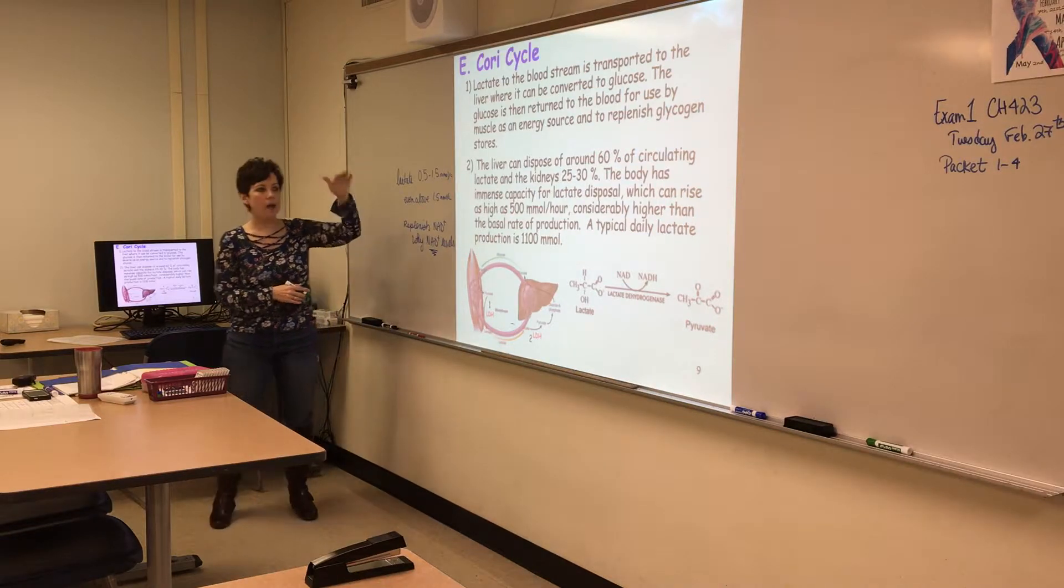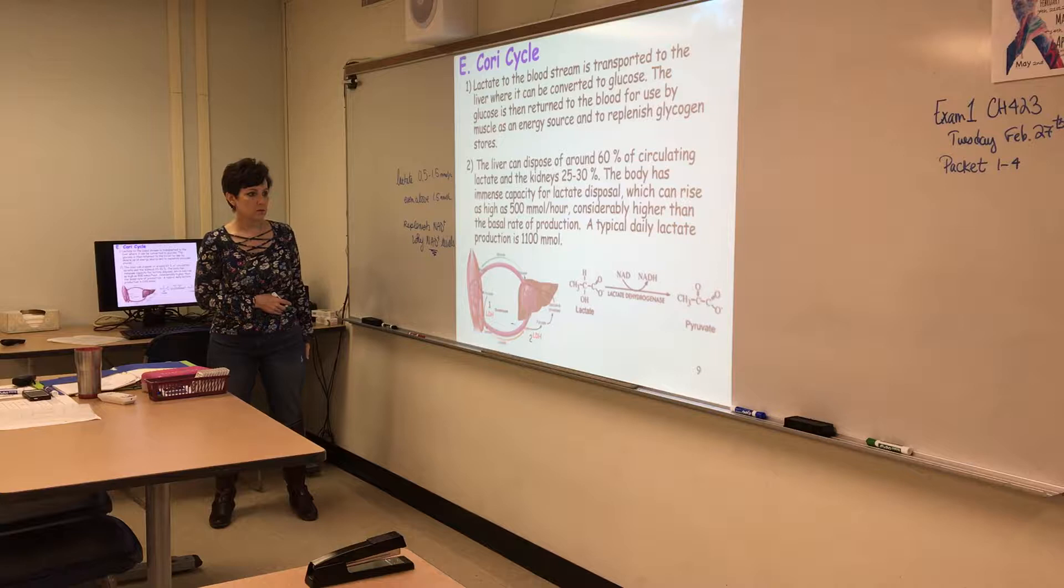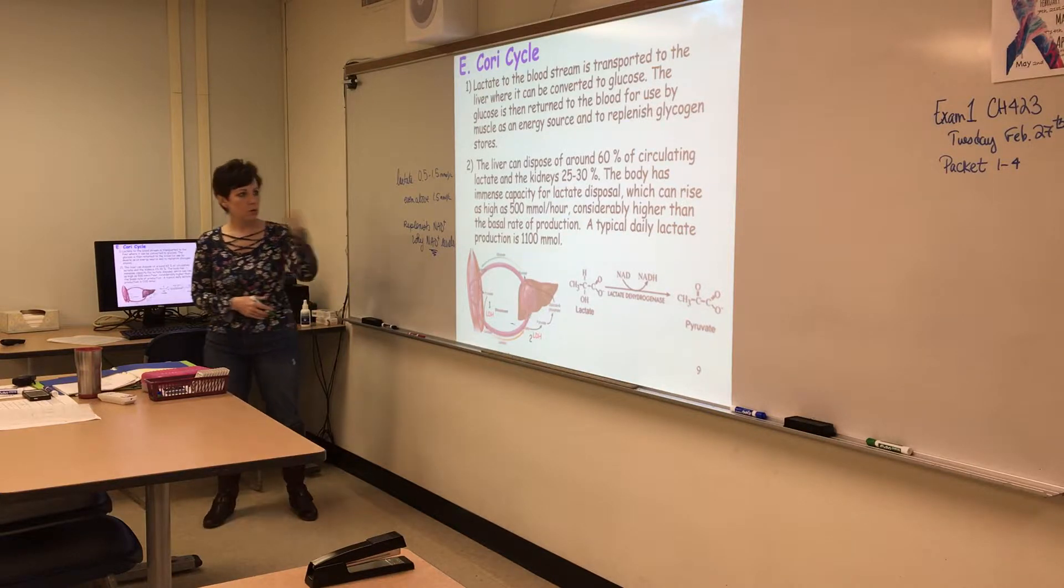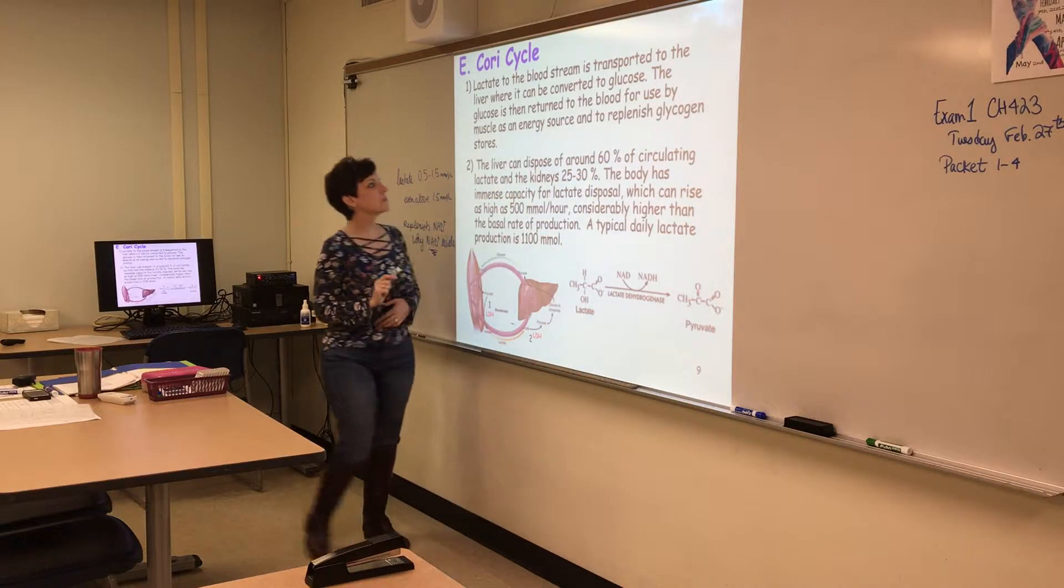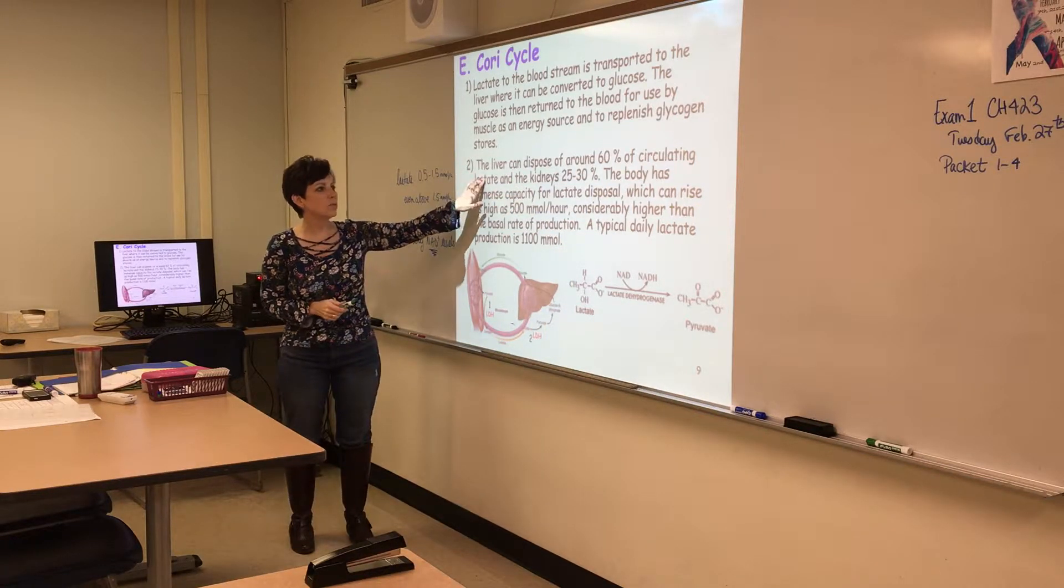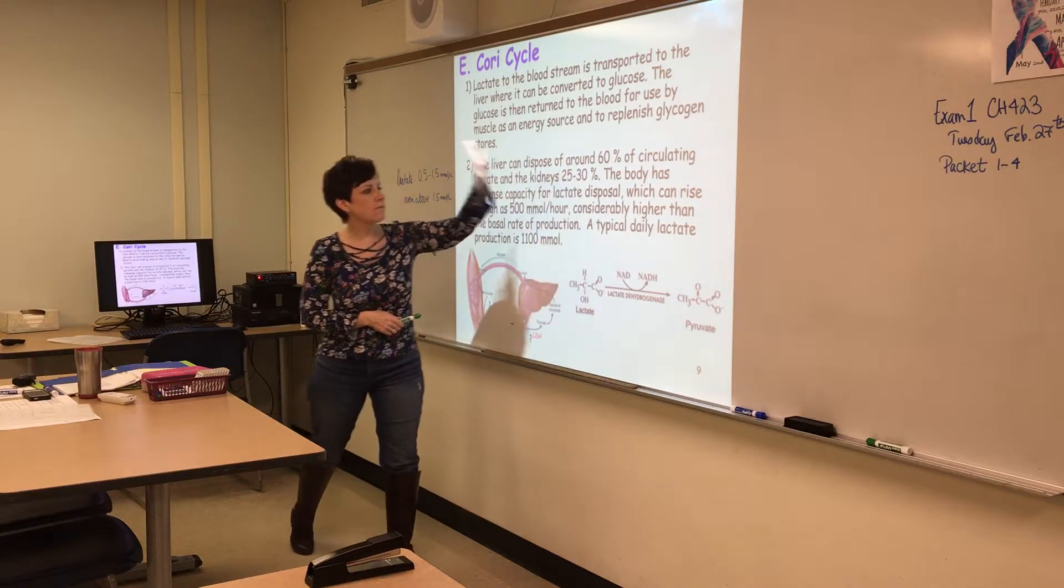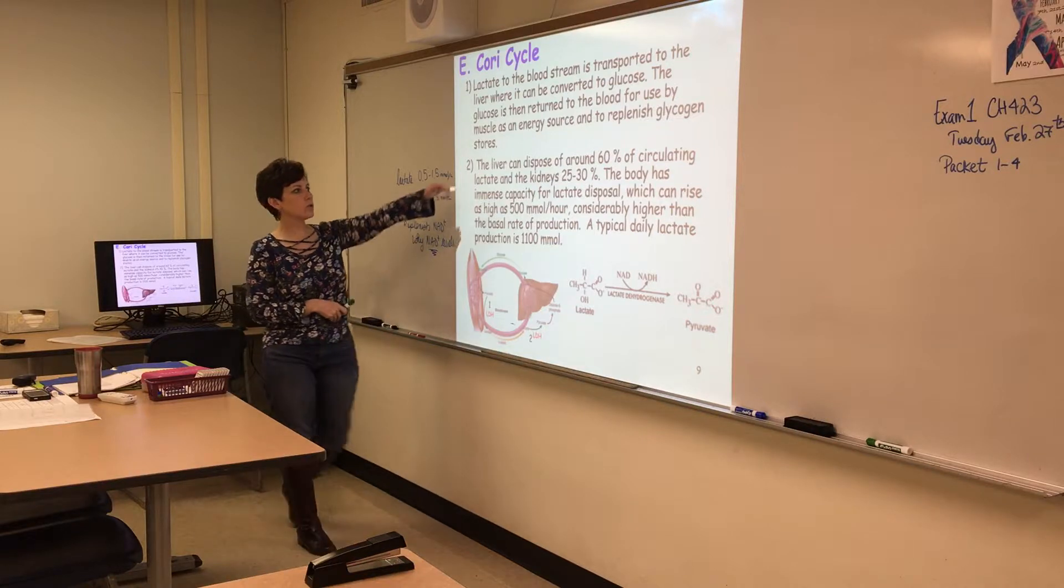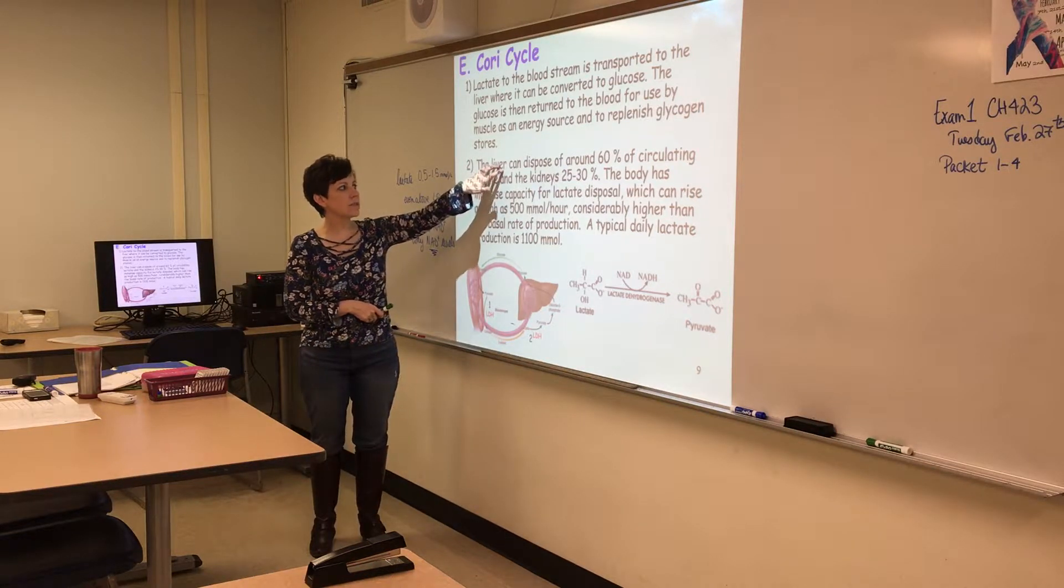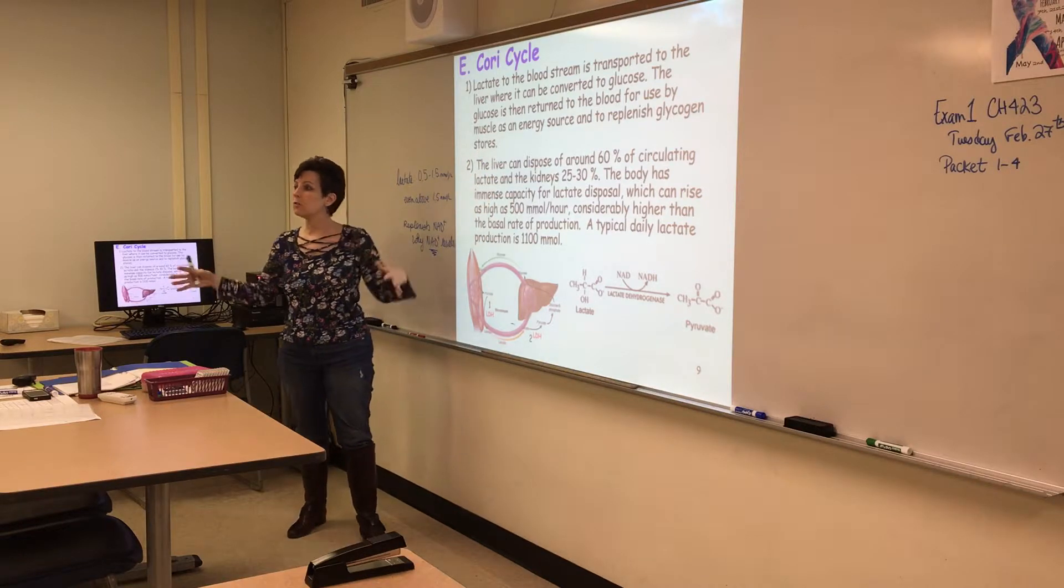If the person still has high levels of lactate, there's something seriously wrong. 60% of the lactate can get removed through the liver and 25% through the kidneys. We can do gluconeogenesis with this if we need to, but once it gets converted to pyruvate it can do other things as well—go through the TCA cycle or synthesize amino acids.